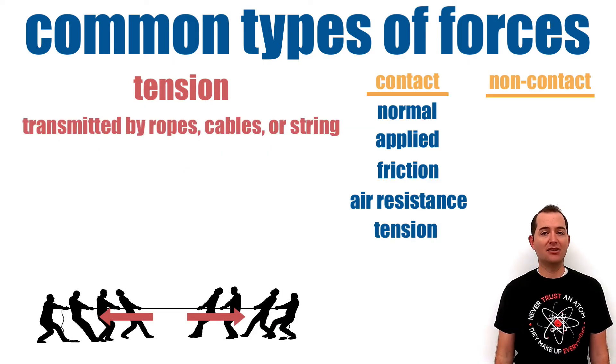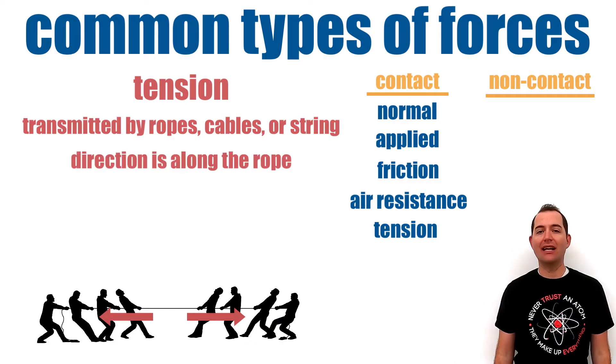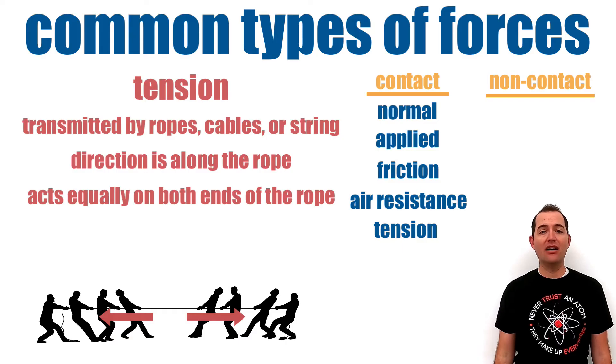Tension is a force that is transmitted by ropes, cables, or strings. The direction of tension is always acting along the direction of the rope, and it acts equally on objects at opposite ends of the rope.